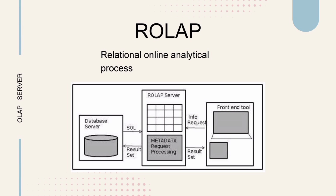The relational OLAP server consists of metadata request processing. In this metadata request processing, the metadata repository holds the information in a structure and relationship of a data format. It fetches the data from the database server and makes sure the data is ready for analysis.